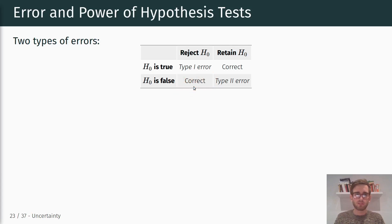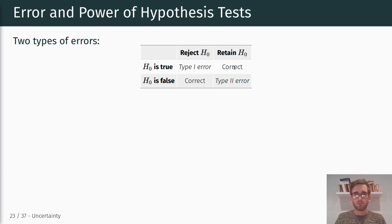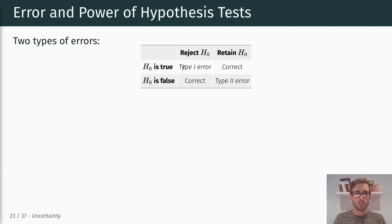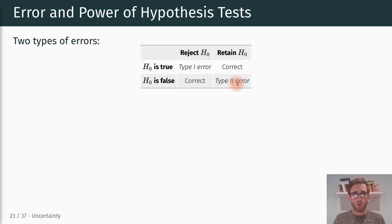In the off-diagonal we make correct decisions: if the null hypothesis is actually false and we reject it, no mistake was made; similarly if the null is actually true and we fail to reject it, no mistake was made. But there are two types of errors: if the null hypothesis is actually true but we reject it, that is a Type I error, also called a false positive. If the null is actually false but we retain it, that is a Type II error, also called a false negative.